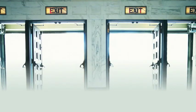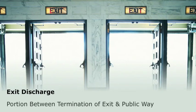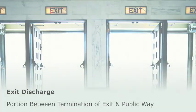The fourth component of a means of egress is the exit discharge. This is the portion of a means of egress between the termination of an exit and the public way. It can be inside a building, such as the main lobby, or outside a building, such as an egress court, courtyard, patio, small alley, or other safe passageway.